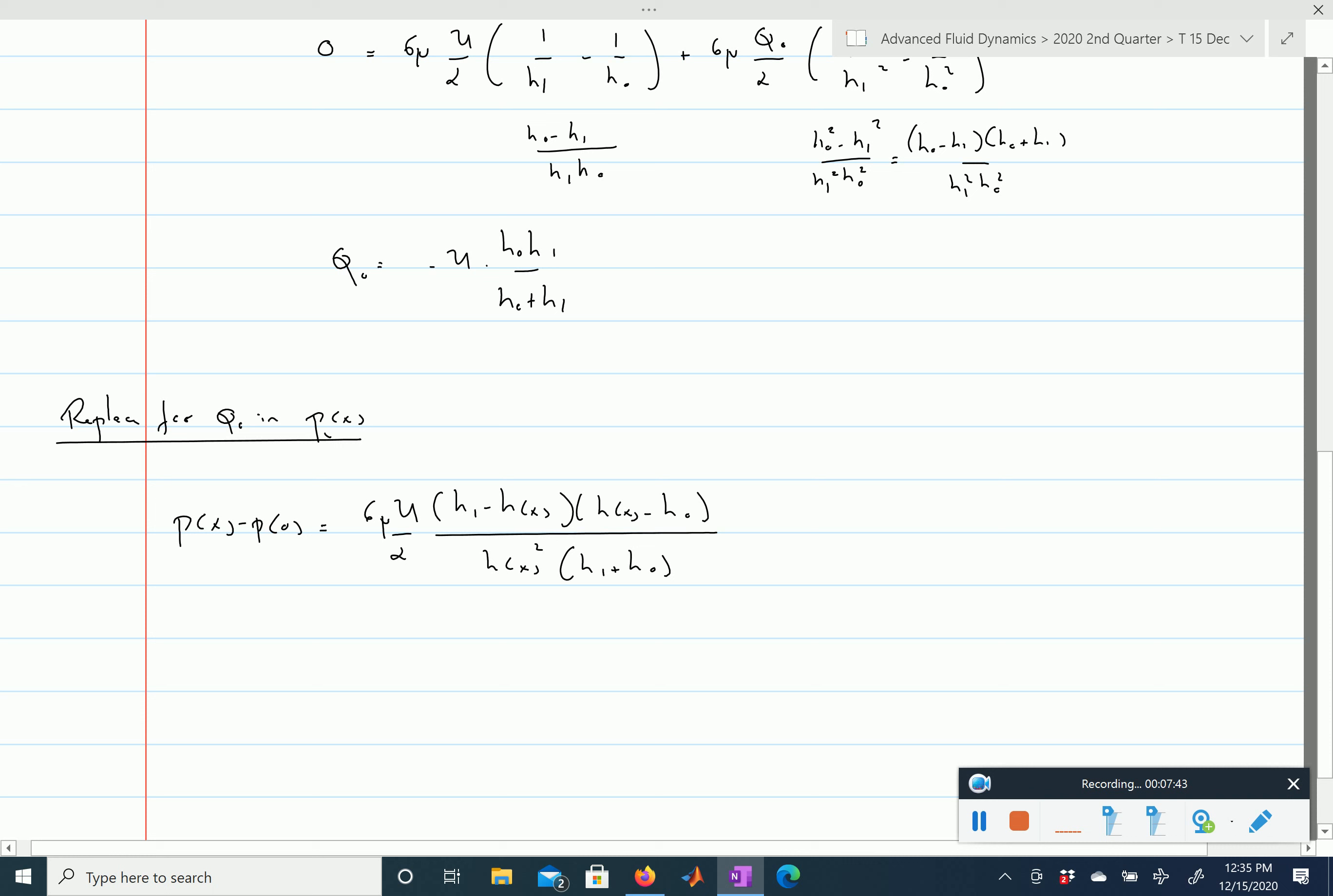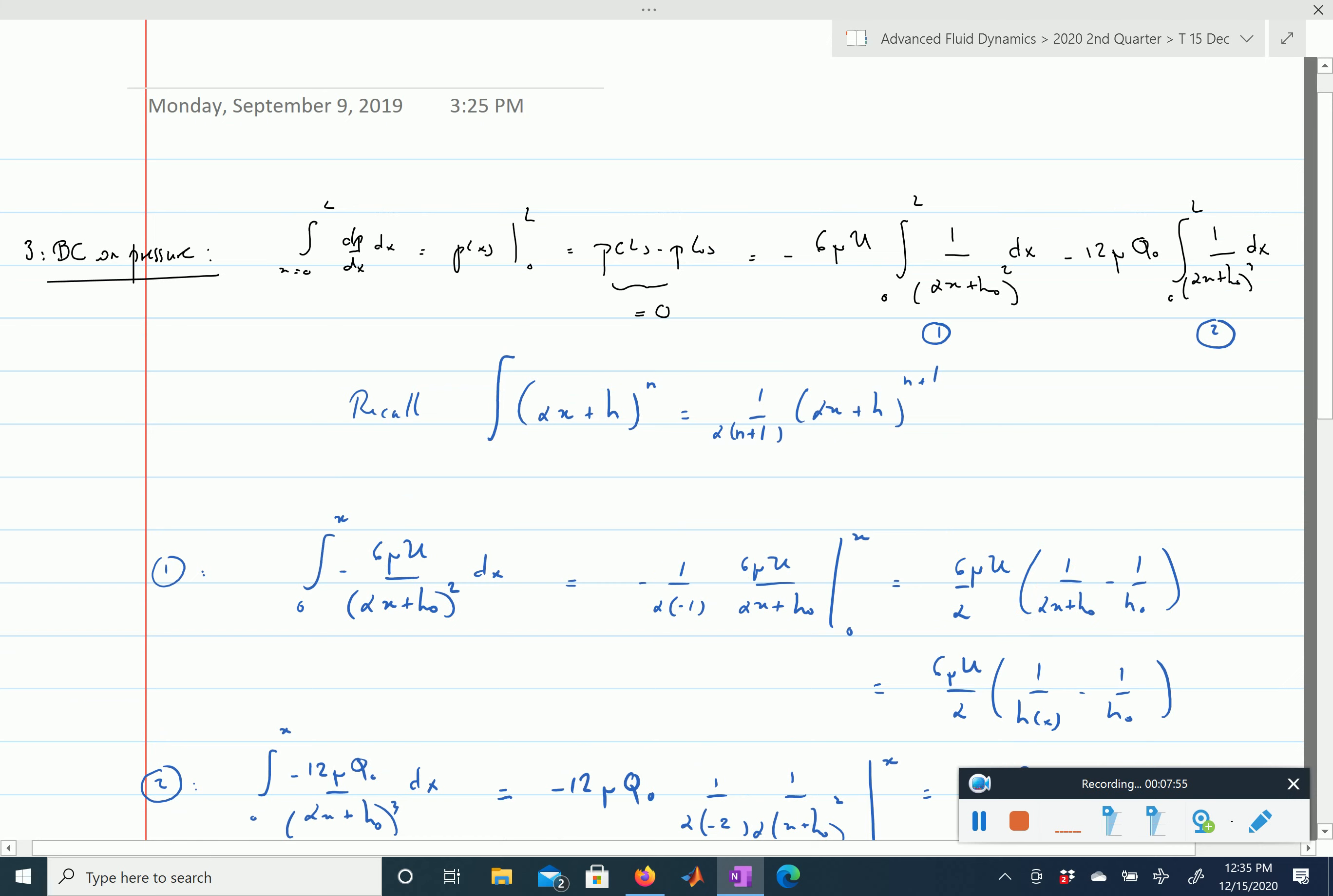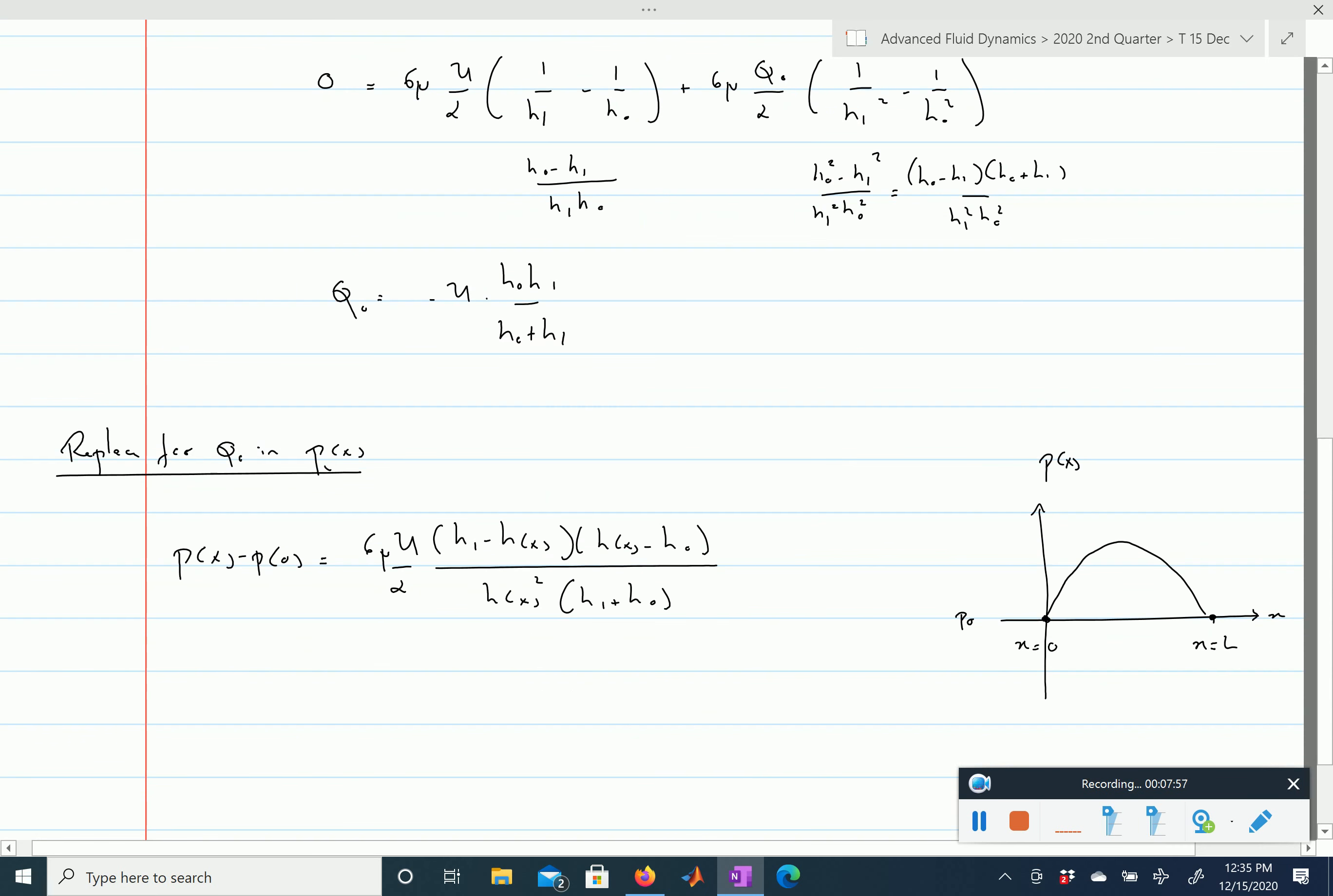So our pressure distribution is going to be p0 at both 0 and l, and in the meantime we will have just simple one maximum. So if you sketch the pressure distribution, you get something like this, you have p0 at x equals 0, you have p0 at x equals l, and then you have a maximum of pressure, not necessarily in the middle here.